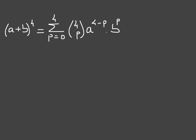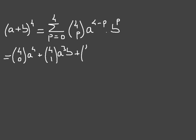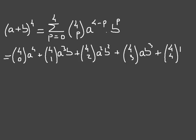Adding all of these terms up — for p = 0, 1, and so on up to p = 4 — it looks something like this: C(4,0) times a to the power of 4, plus C(4,1) times a cubed times b, plus C(4,2) times a squared b squared, plus C(4,3) times ab cubed, plus C(4,4) times b to the power of 4.